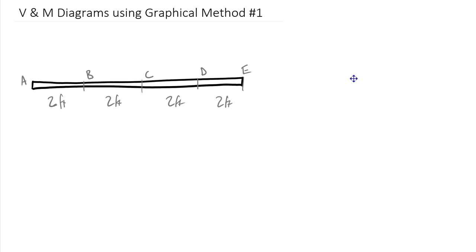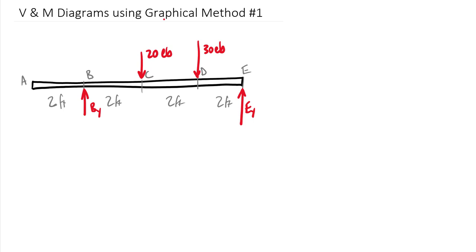For the first beam, we have a vertical support force at B — let's call this B sub Y. There's a vertical force downward at C equal to 20 pounds, a larger force at D of 30 pounds, and then a vertical support force at E, called E sub Y. Don't assume that B_Y is 20 and E_Y is 30 just because those loads are nearby — you need to prove it.